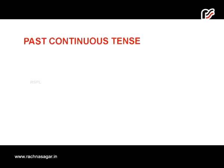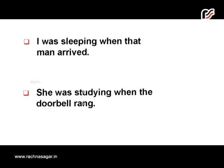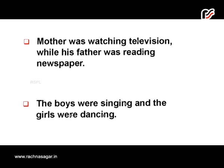Past continuous tense: 'Asha was watching TV' and 'The boy was running.' Past continuous is used to describe an action that was in progress at a point of time but is over now. It is also used when one action was in progress when another action took place — for example, 'I was sleeping when that man arrived' and 'She was turning when the doorbell rang.' Additionally, it describes two actions going on at the same time in the past, as in 'Mother was watching TV while his father was reading newspaper.'